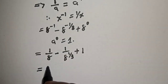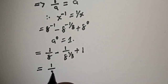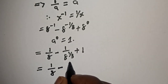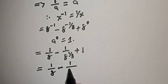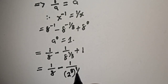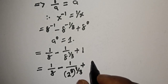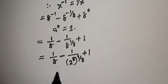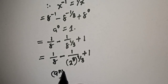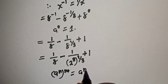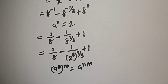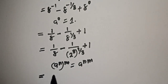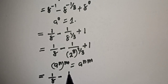This is equal to 1 over 8, minus 1 over — now 8 can be written as 2 raised to power 3, and then to the power of 1 over 3, plus 1. Remember the rule: a raised to power n, to the power of m, equals a raised to power n times m. So 2 raised to power 3 times 1 over 3 is 2 raised to power 1, which is 2.